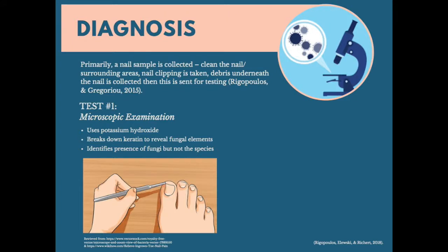When conducting a laboratory test a nail sample must be collected. This requires ensuring the nail and surrounding areas are cleaned using alcohol to remove external contaminants such as bacteria. A nail clipping is then taken from the nail plate and a sample of the debris underneath the nail is collected using a curette. The sample is then sent to a laboratory for microscopic examination using potassium hydroxide, which breaks down the keratin to reveal the fungal elements.